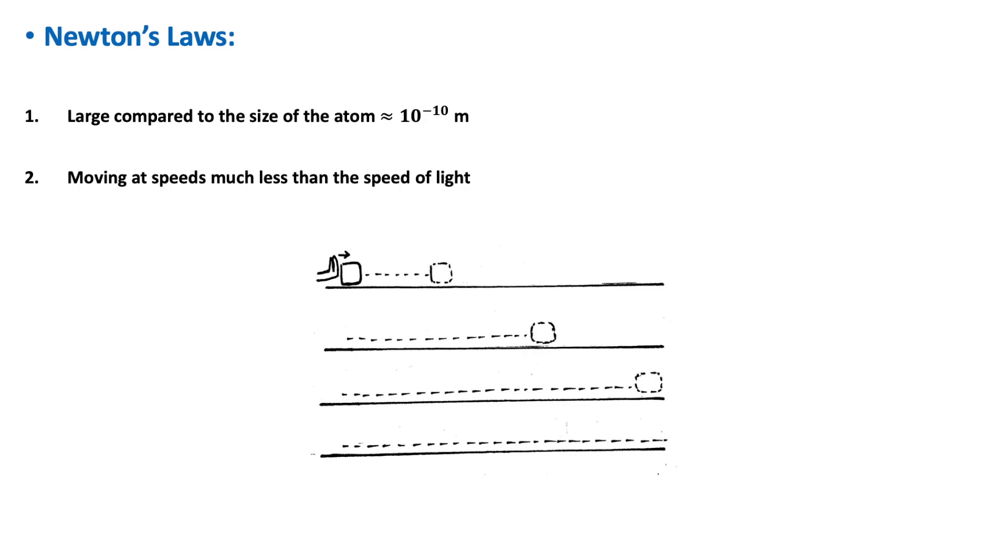We will now discuss Newton's first law. Between 1648 and 1727, Isaac Newton formulated his three famous laws of motion, which describe the relationship between the force acting on an object and the acceleration of that object. Newtonian or classical mechanics, which is based mainly on Newton's three laws of motion, deals only with objects that are large compared to the size of the atom, which is approximately one angstrom, and moving at speeds much less than the speed of light.